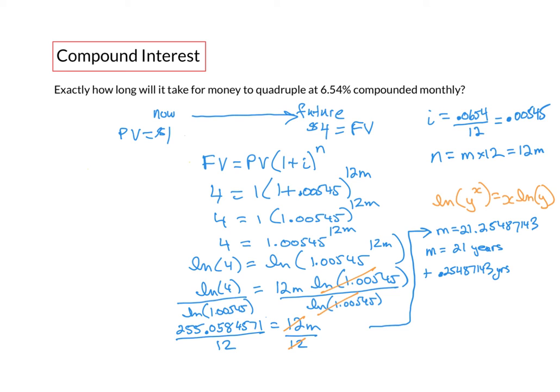So m would equal 21 years plus 0.25487143 years. And since there are 12 months in a year we can multiply this by 12 months in one year. The years cancel and therefore we're left with 3.05845716 months.